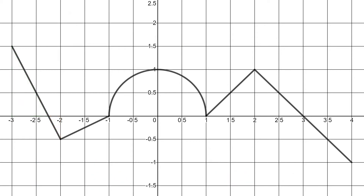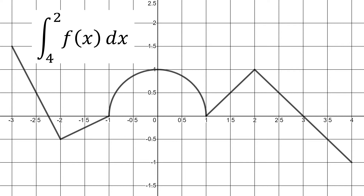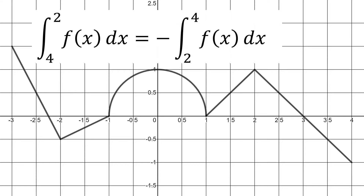The fourth example is the integral from four to two of our function with respect to x. Again, the limits are backwards, so we put a negative out front and change them to two to four. We have two triangles that look like isosceles right triangles — nearly identical — with the green above the x-axis and the red below. For both triangles the base is one and the height is one, giving an area of one half each. Since one is positive and one is negative, they cancel out, giving us zero.